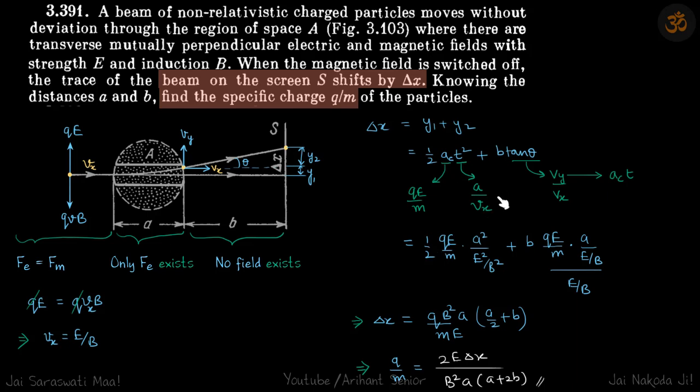So just put all these values here: half acceleration QE by M, time A by Vx, which is A by E by B whole squared, plus B tan theta Vy by Vx. Vy is acceleration into T, acceleration QE by M, time period A upon E by B, divided by Vx. Vx is again E by B. So simplify this, you will get delta X as this, and we need to find Q by M, which we can get as our answer.